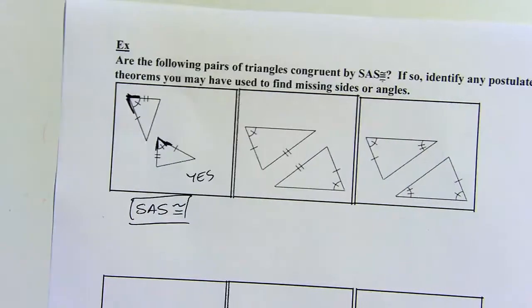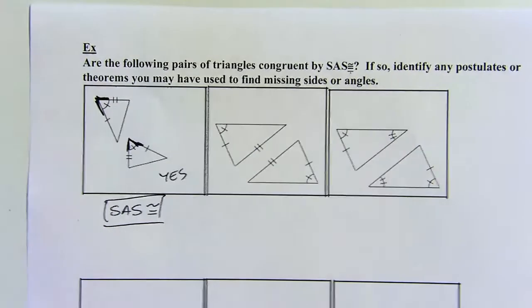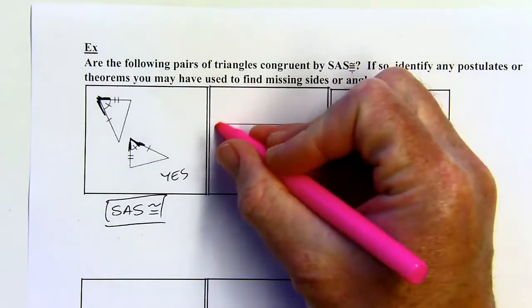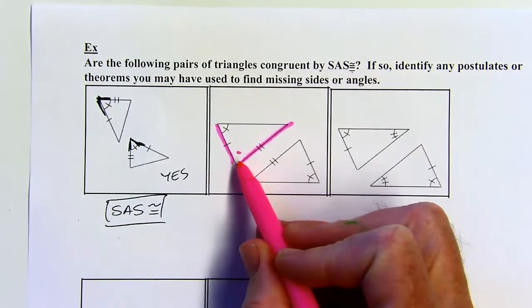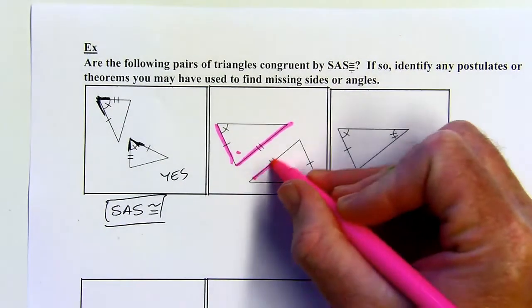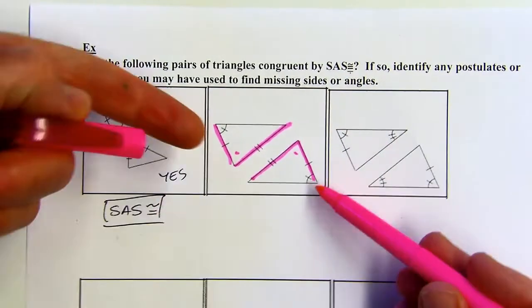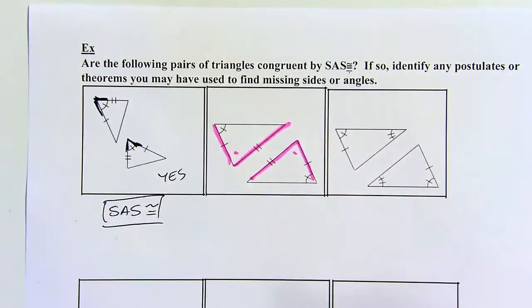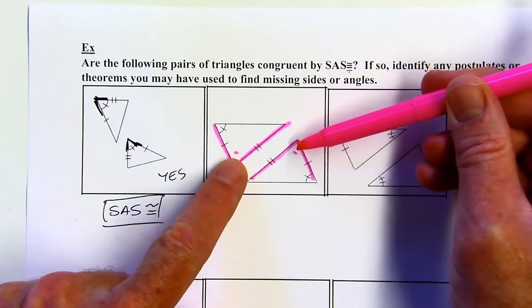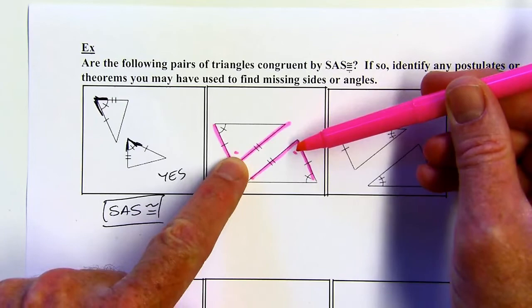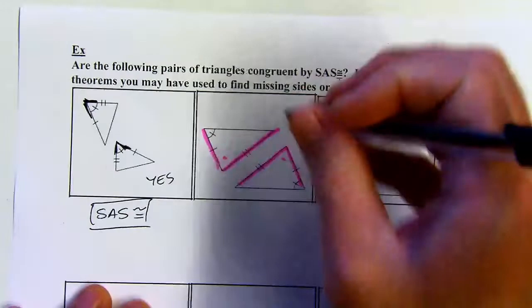Next up, I do have two sides and an angle here, but the sides I have would form a different angle — that would be the included angle — and that's not the one I have congruent. So this is not SAS. If the angle where I put the two dots were congruent, then I'd have SAS, but that's not what I have here. So the answer is no.